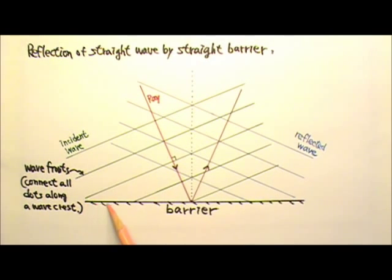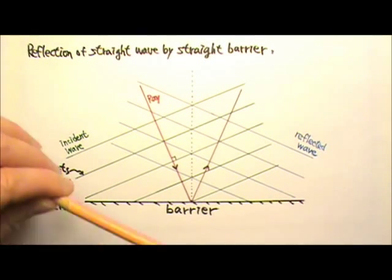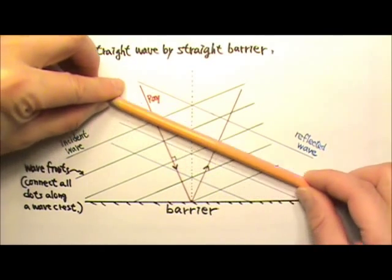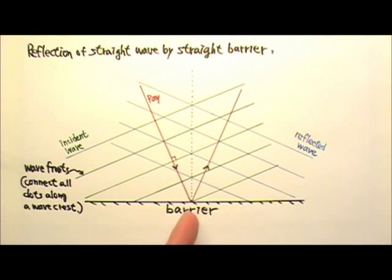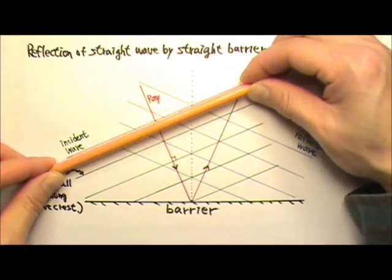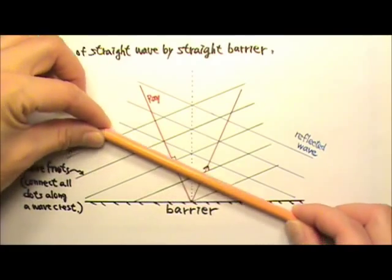After reflecting off this straight barrier, the reflected wave fronts move off like this. The reflected ray travels that way. The wave goes like this. Incident wave, reflected wave.